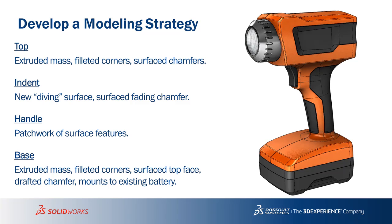Before tackling a tricky model, develop a modeling strategy — what features may we want to use to define the shape? The top is pretty blocky, so I may get away with an extruded mass, fill out some corners, and do some manual surface work to build the chamfers. The indent is trickier — we'll need surface features and create a new diving surface that cuts into the part. The handle will definitely be surface features and a patchwork of them. The base starts similarly to the top as an extruded mass, then we add a surface top face and use surface and parting line draft tools to build the chamfer.